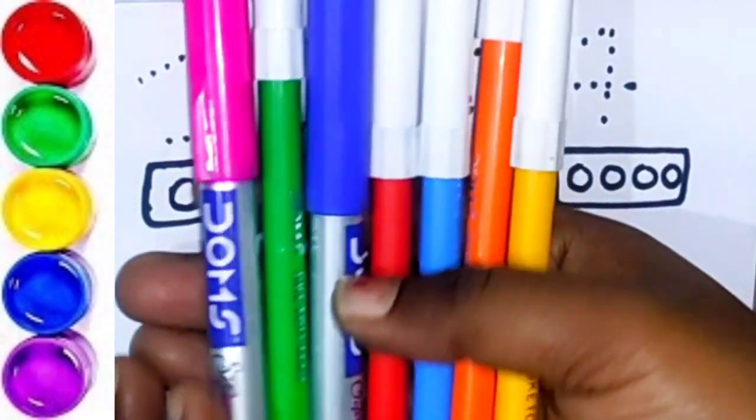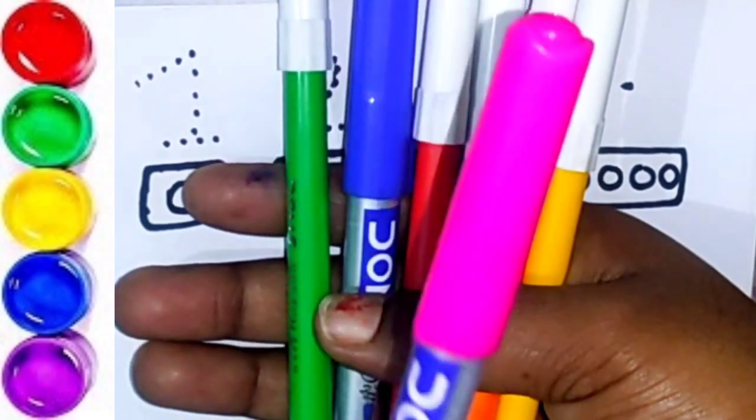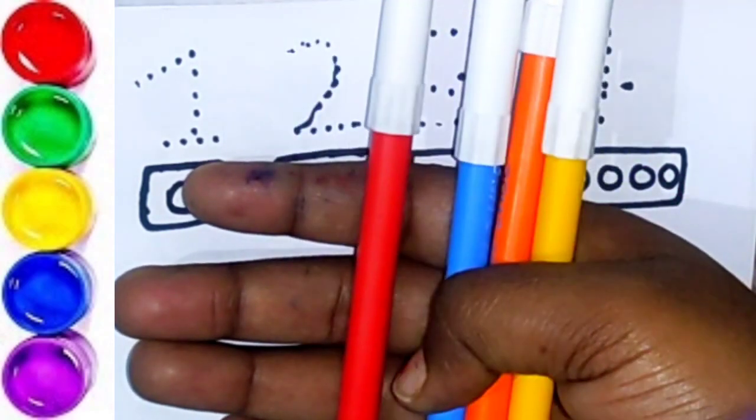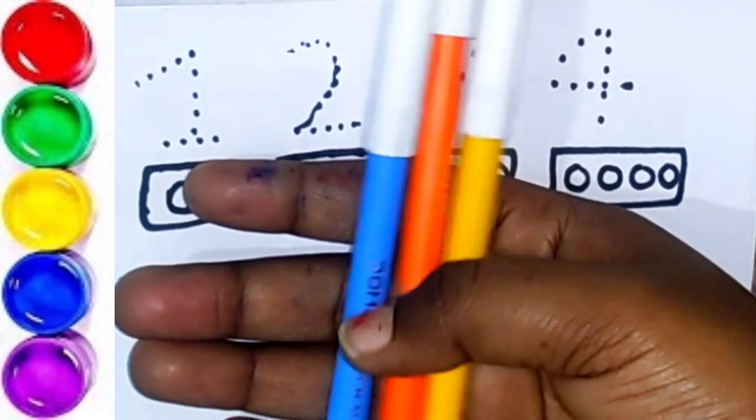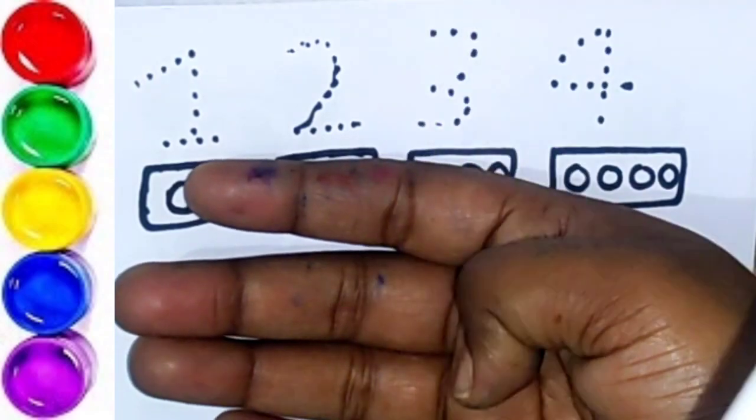Hello kids, today I will learn counting numbers. Let's learn color: purple color, green color, blue color, red color, sky blue color, orange color, white color.